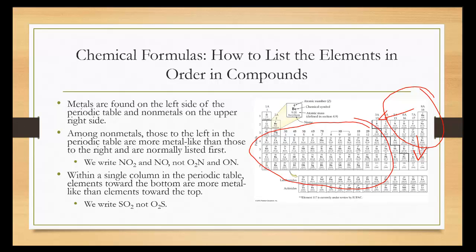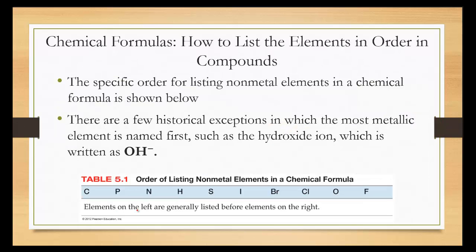So therefore, if we look at nitrogen and oxygen, NO2 and NO are written this way, not the other way around, because nitrogen is closer to the left. Within a single column in the periodic table, elements on the bottom are more metallic-like than elements towards the top. So if we look at oxygen and sulfur, sulfur is further down, therefore it's written first in SO2 and not O2S.